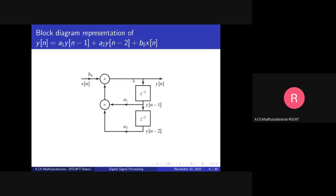Whatever we get at this node equals y(n). Note that we are always implementing delay one sample at a time — each block corresponds to one sample delay z^(-1). Instead of going directly for z^(-2), we cascade two single-sample delay blocks. These two together give z^(-2) to obtain y(n-2). We are adding two terms at a time rather than all at once: first adding two terms, then adding the result with the next term, and so on sequentially.